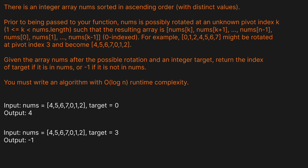There is an integer array nums sorted in ascending order with distinct values. Prior to being passed to your function, nums is possibly rotated at an unknown pivot index k, where 1 <= k < length of nums. This means the array is shifted by k to the right and may wrap around. For example, the array [0,1,2,4,5,6,7] rotated at pivot index 3 would become [4,5,6,7,0,1,2].